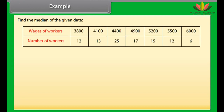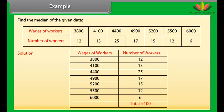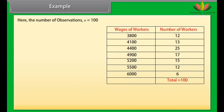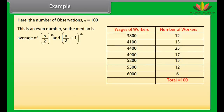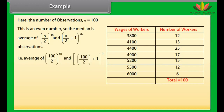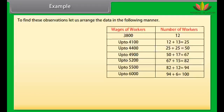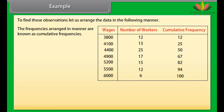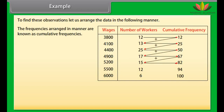Find the median of the given data. Solution: The wages and number of workers are listed; total number of workers is 100, so n equals 100. Since this is even, the median is the average of the 50th and 51st observations. We arrange the data using cumulative frequencies for wages up to 3,800; up to 4,100; up to 4,400; up to 4,900; up to 5,200; up to 5,500; up to 6,000. From the cumulative frequency table, the 50th observation is 4,400 and the 51st observation is 4,900.